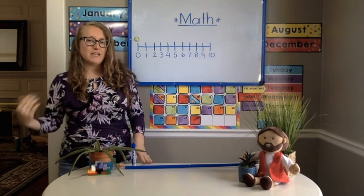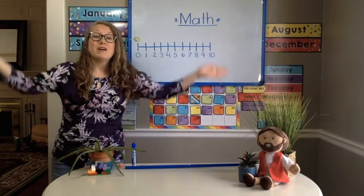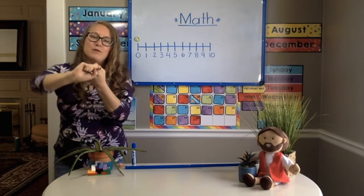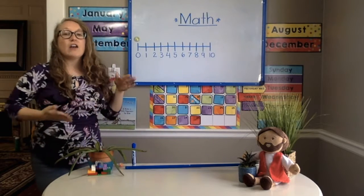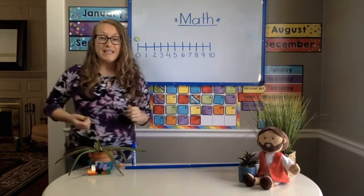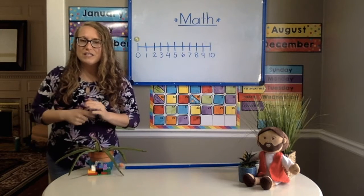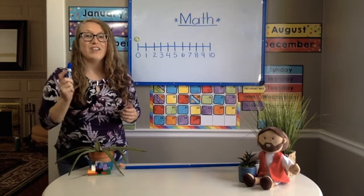So remember, addition is where we take two small numbers and we put them together to make a big number. We use a plus sign because it's like a bow tie. It ties our numbers together. And our equal sign is like a road. It leads us to the answer. Do you remember what we call the answer for an addition problem? We call it the sum.